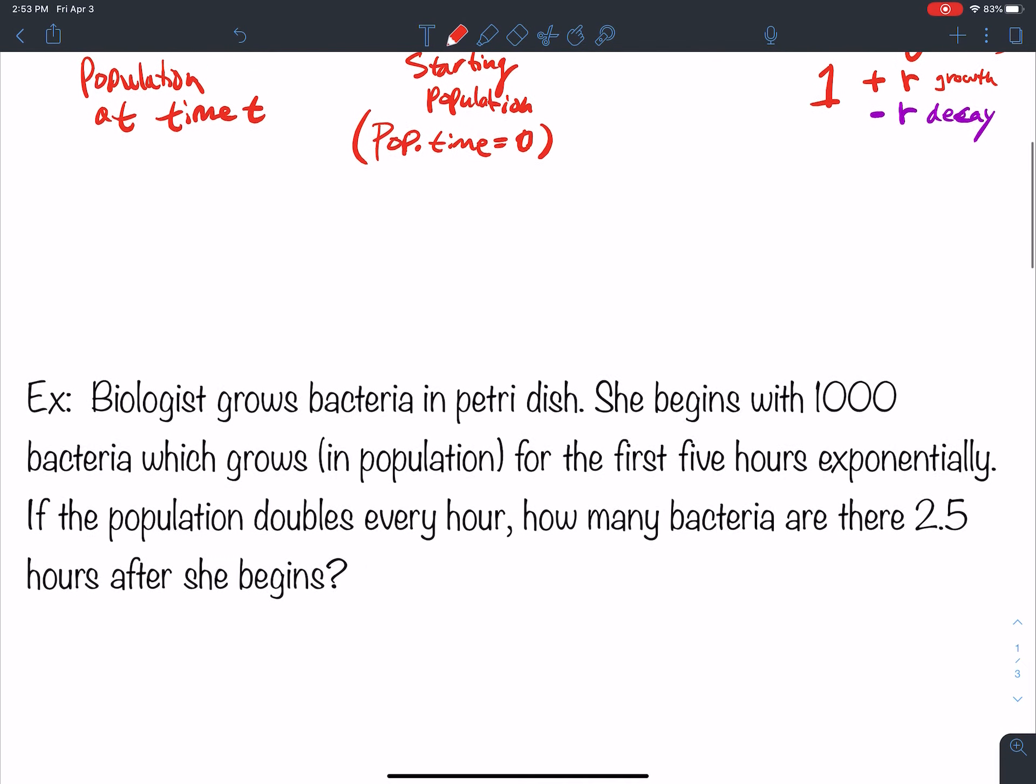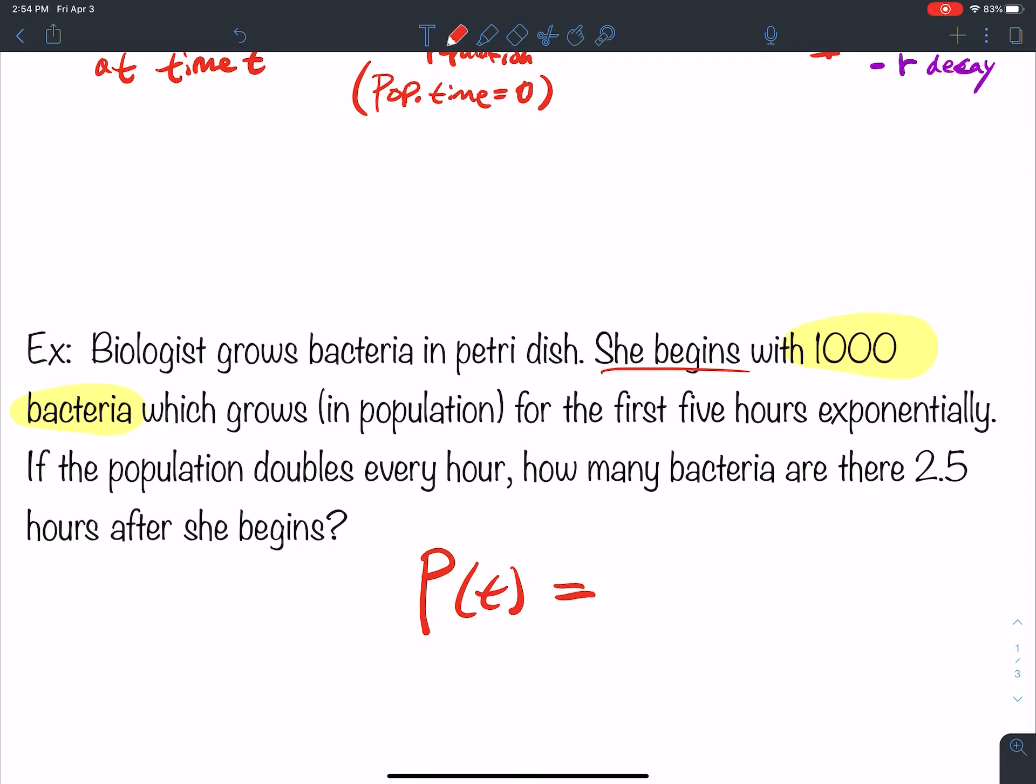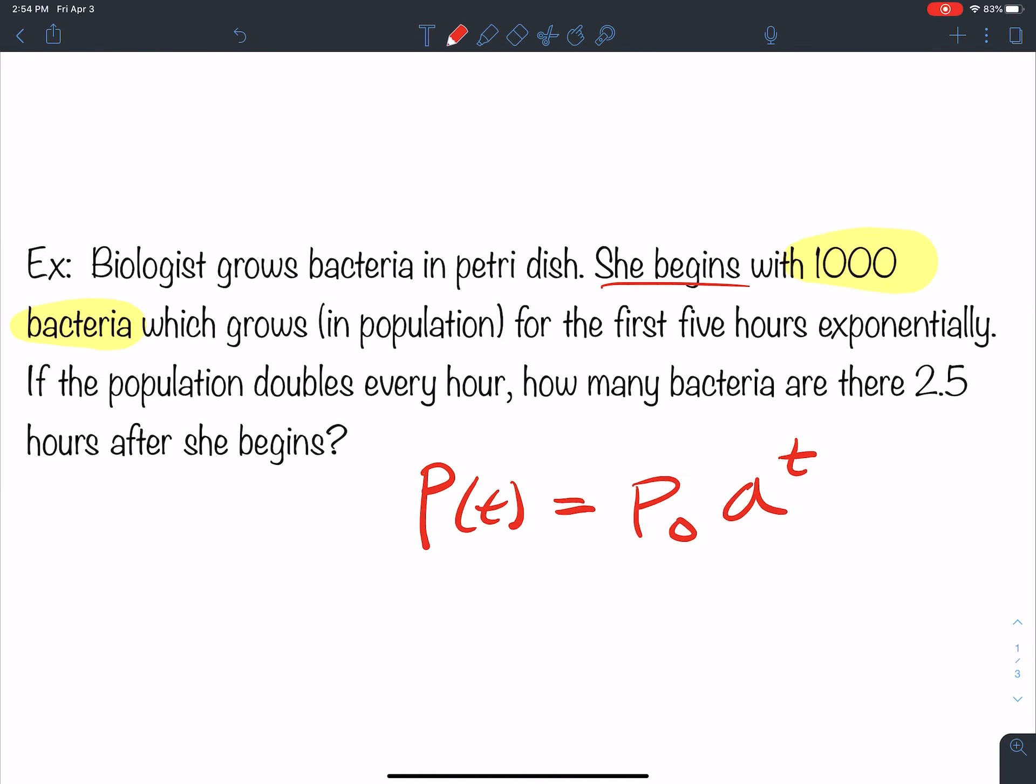So the population is the initial population times your growth rate raised to how long your growth rate is going to last for. So we've got an example here. A biologist grows bacteria in a petri dish. She begins with a thousand bacteria, which grows in population for the first five hours exponentially. If the population doubles every hour, how many bacteria are there after two and a half hours? Anytime you have a word problem, first thing I want you to go through is find all the numbers. First number I see, you begin with a thousand bacteria. So you're beginning with a thousand bacteria. So here's my formula. Write down what you know. P of t equals P naught a to the t.